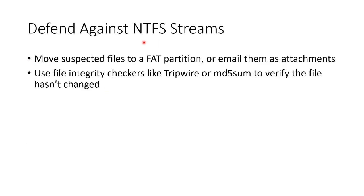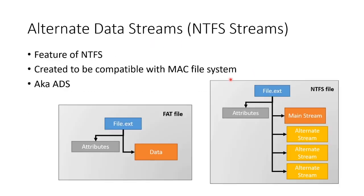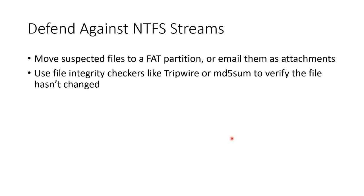So how do we defend against NTFS streams? If you think a file is using an alternate data stream, copy it to a FAT partition, because the alternate data stream cannot go along. Or email it as an attachment, or send it across the network as an upload, because the alternate data stream has to be on NTFS — it will get left behind, disassociated from the main file, and left behind as trash.